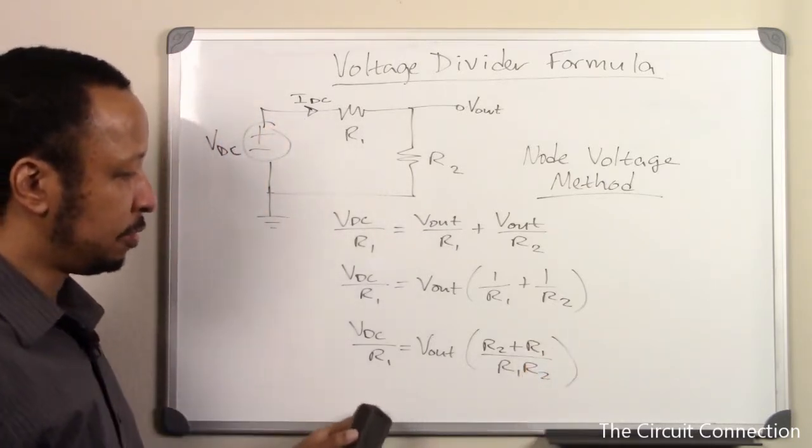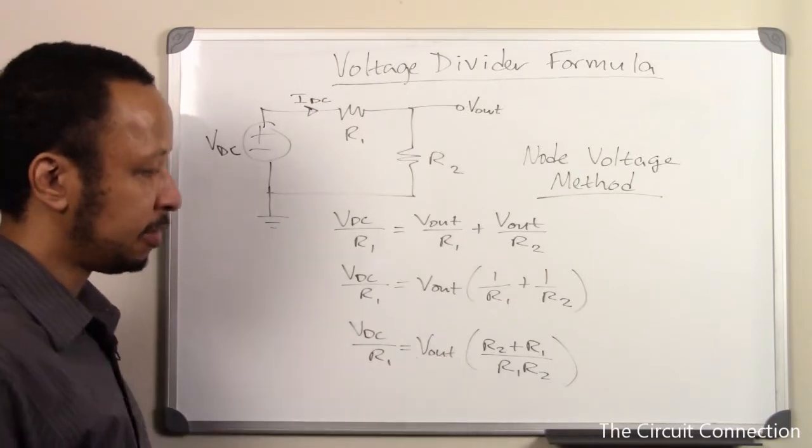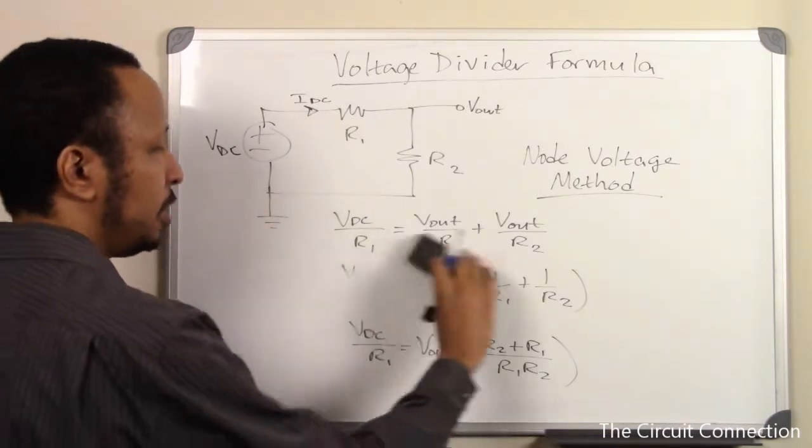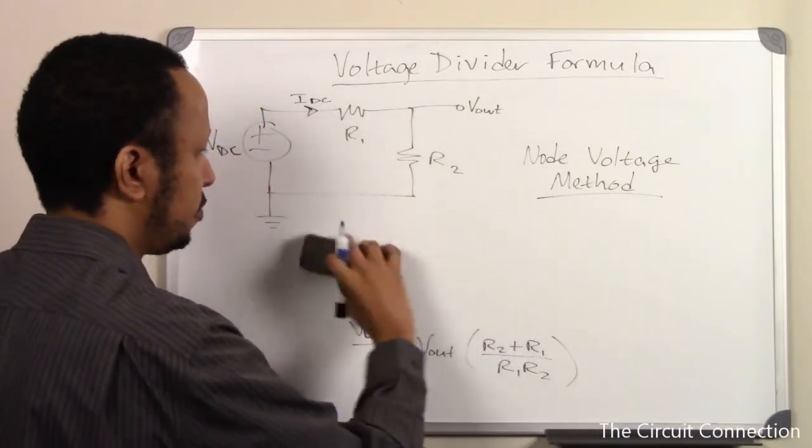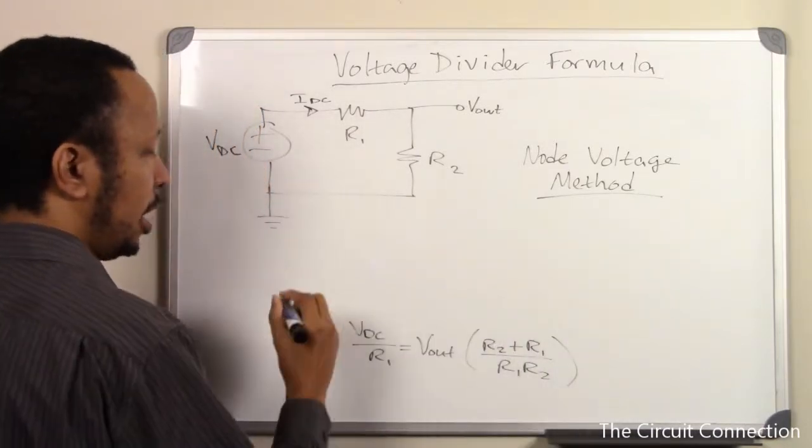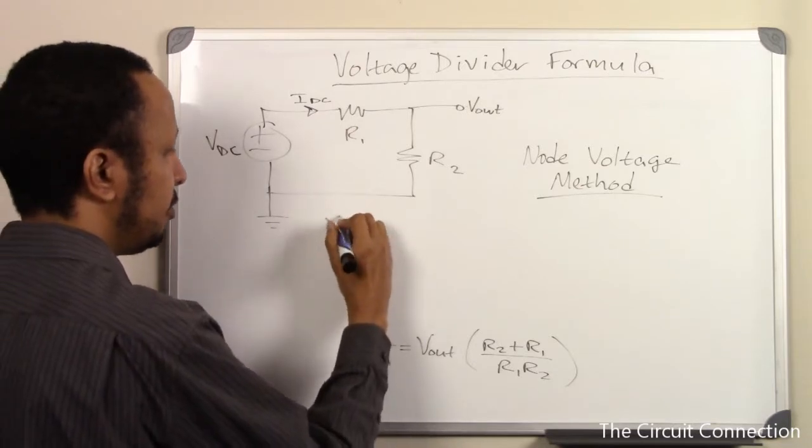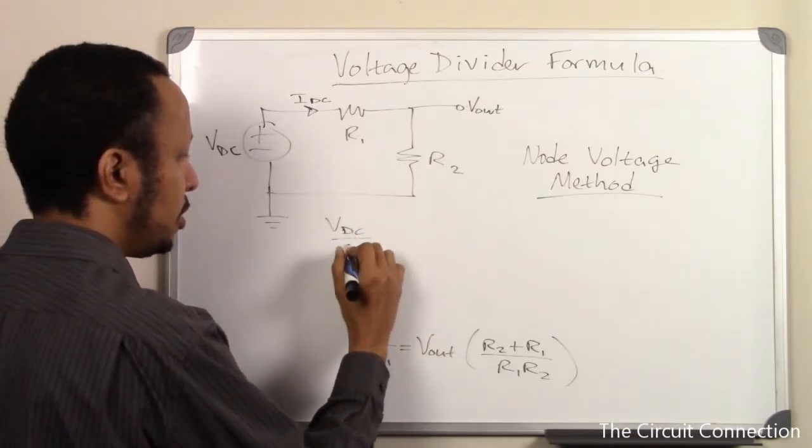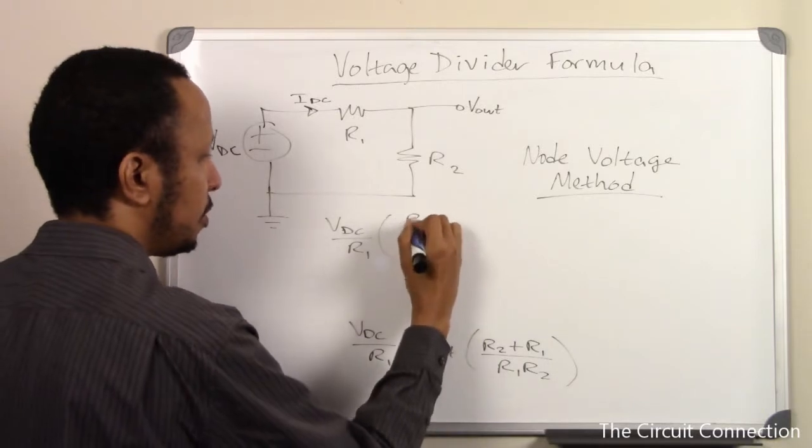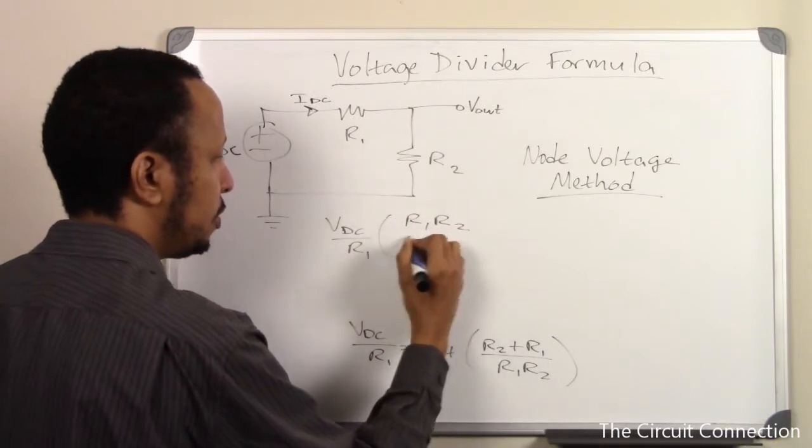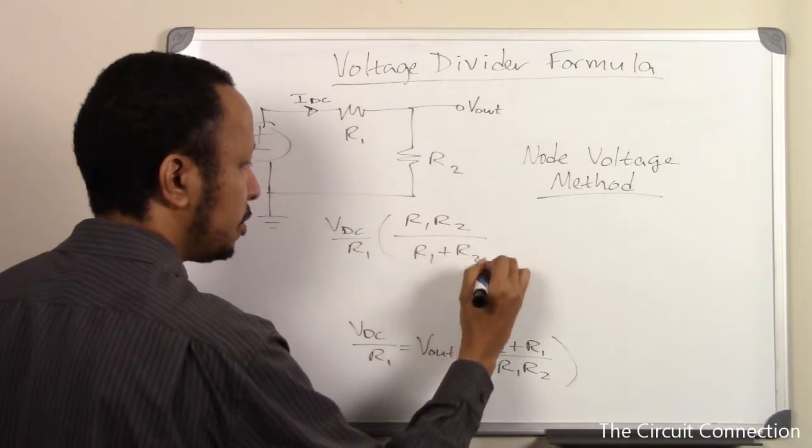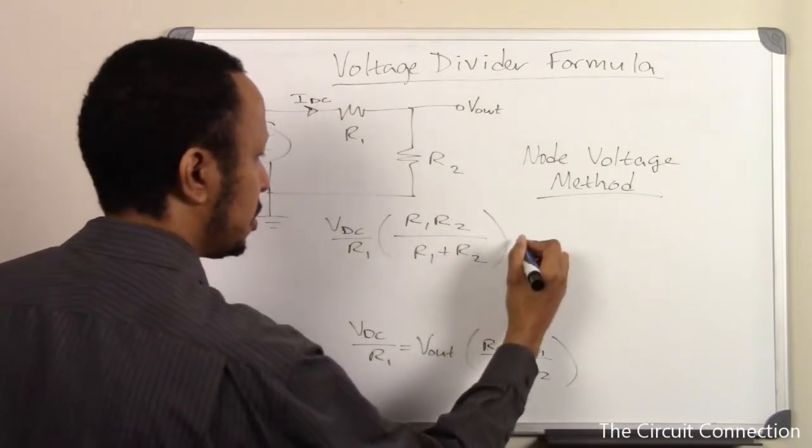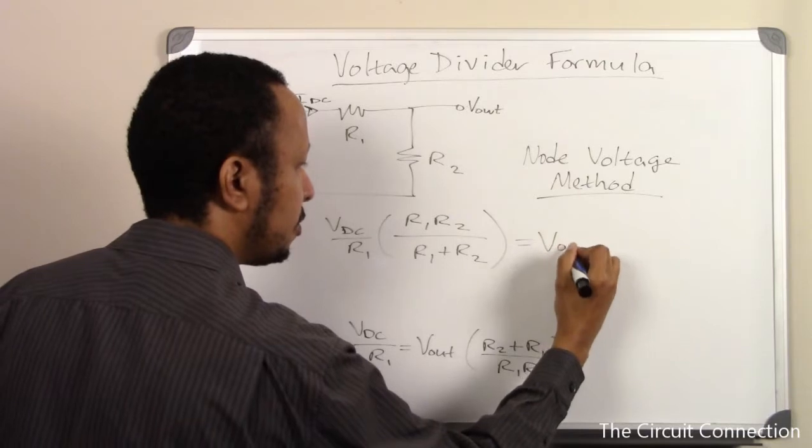Next what we're going to do is bring this over to the other side, because now we can isolate Vout which is what we want our expression to tell us. And so now we have VDC over R1 times R1 R2 over R1 plus R2 equals Vout.